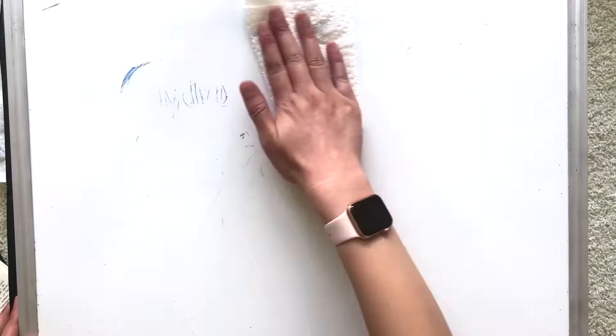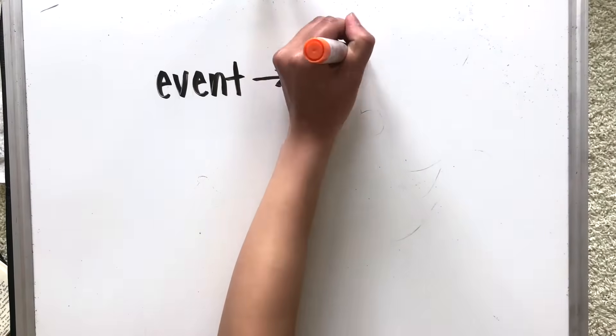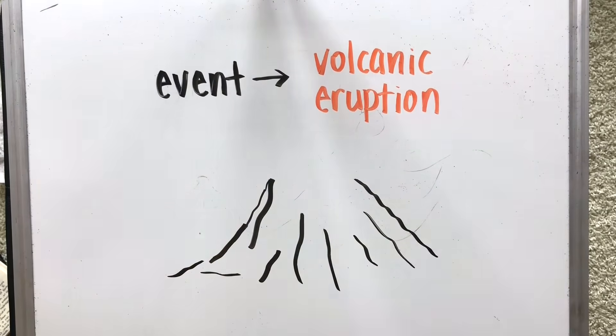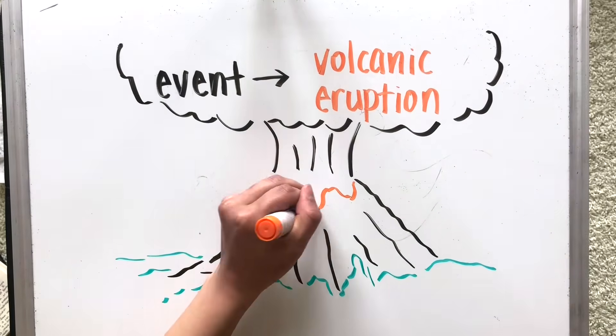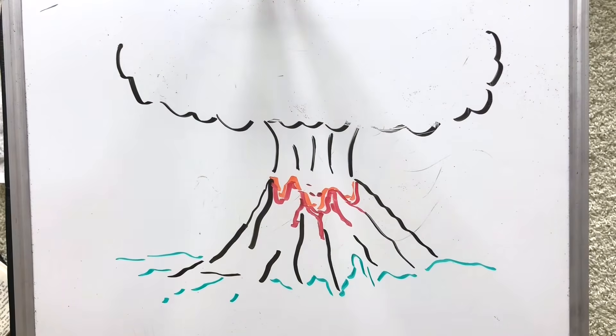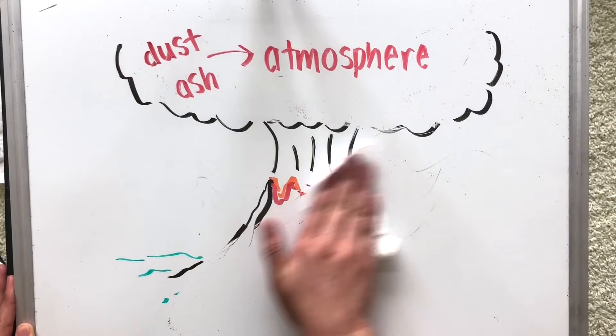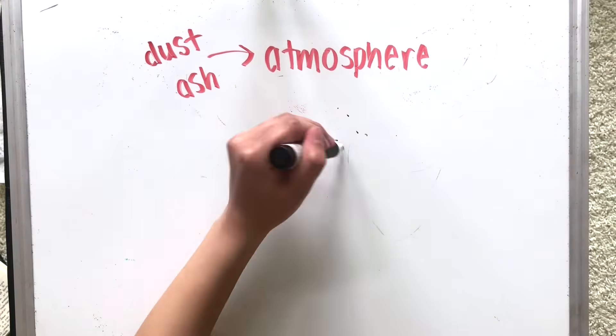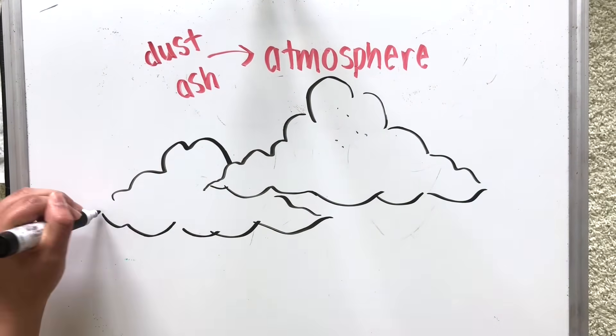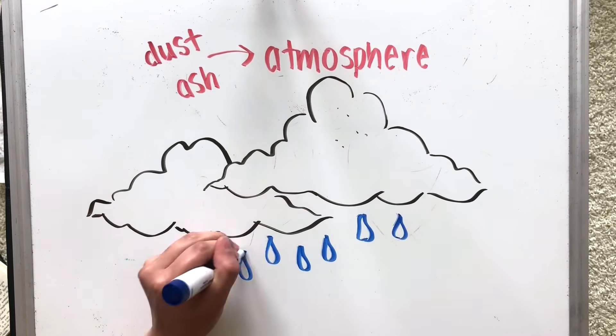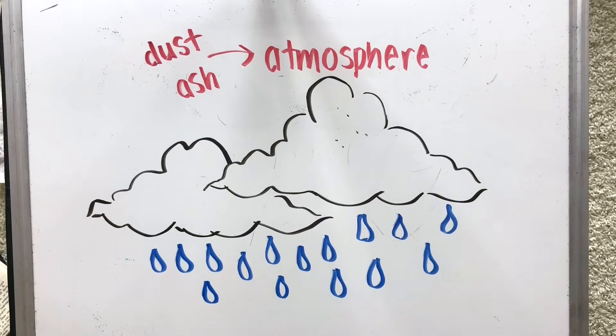An example of an event is a volcanic eruption. It can cause big effects and changes on all of earth's systems. When a volcano erupts, it releases a lot of ash and dust particles into the air, marking an interaction between the geosphere and the atmosphere. Water, part of the hydrosphere, condenses around these dust particles to form clouds.